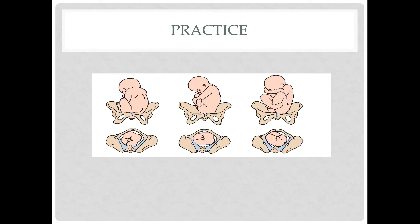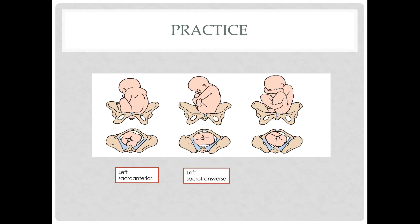For breech presentation, the marker is the sacrum. The sacrum is identified near the curvature of the buttocks. In the first example, with the sacrum pointing anteriorly to the left, the fetal position is left sacro anterior. The next picture shows left sacro transverse because the sacrum is pointing towards the 3 o'clock position. And the last would be left sacro posterior.